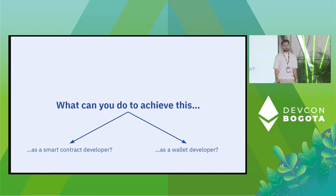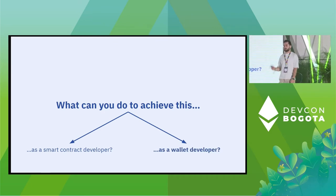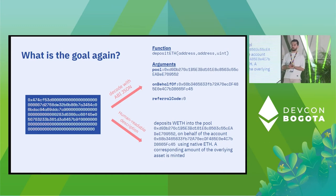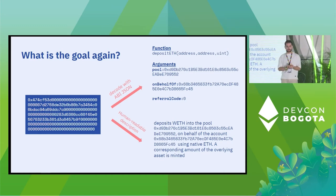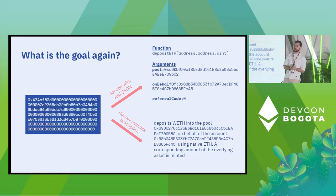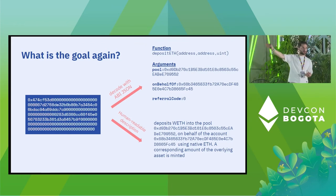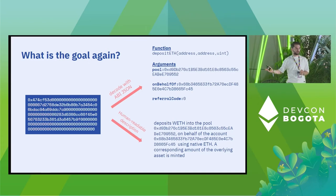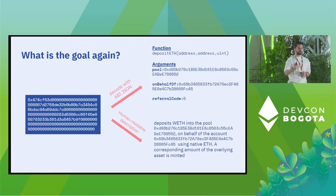Now let's see what you can do as a wallet developer. We have a contract call — instead of showing a raw byte string we want to show something more user-friendly. One thing to do is decode this call via the ABI JSON — you can show the function name, variable names, et cetera. Then you want to show a human-readable description of what the user is trying to do, if the code is well documented.